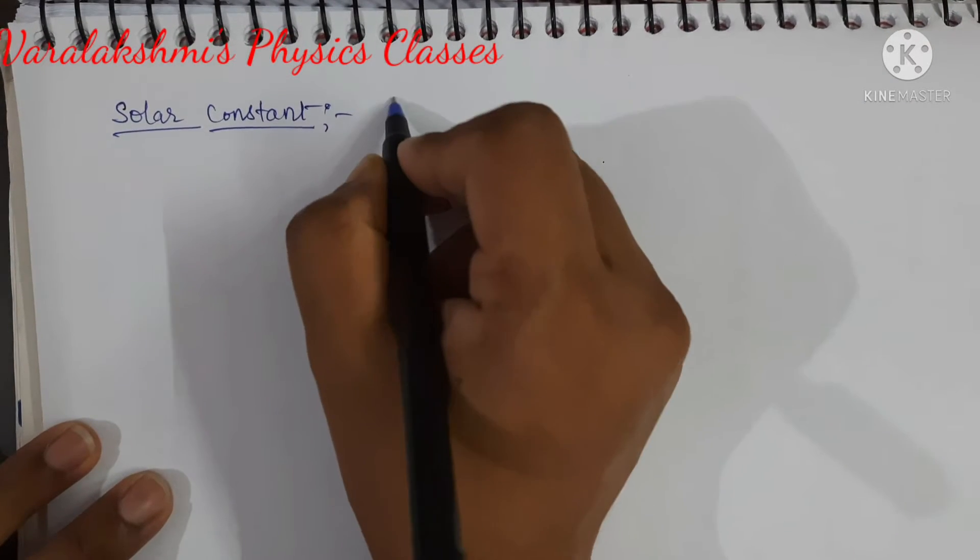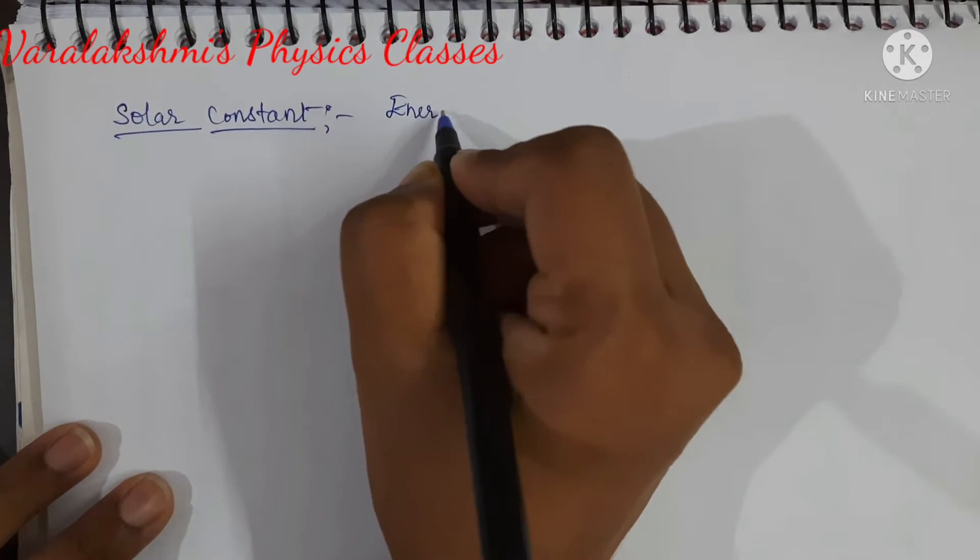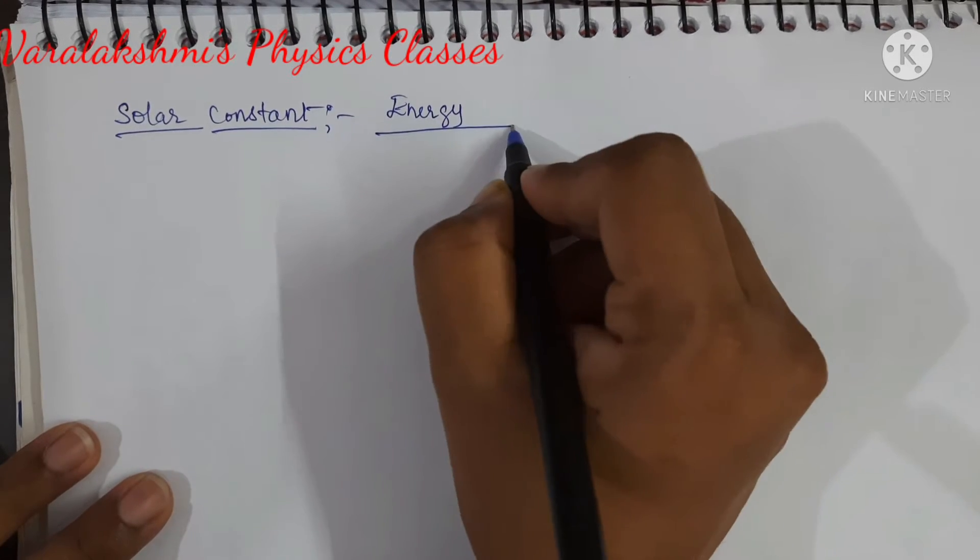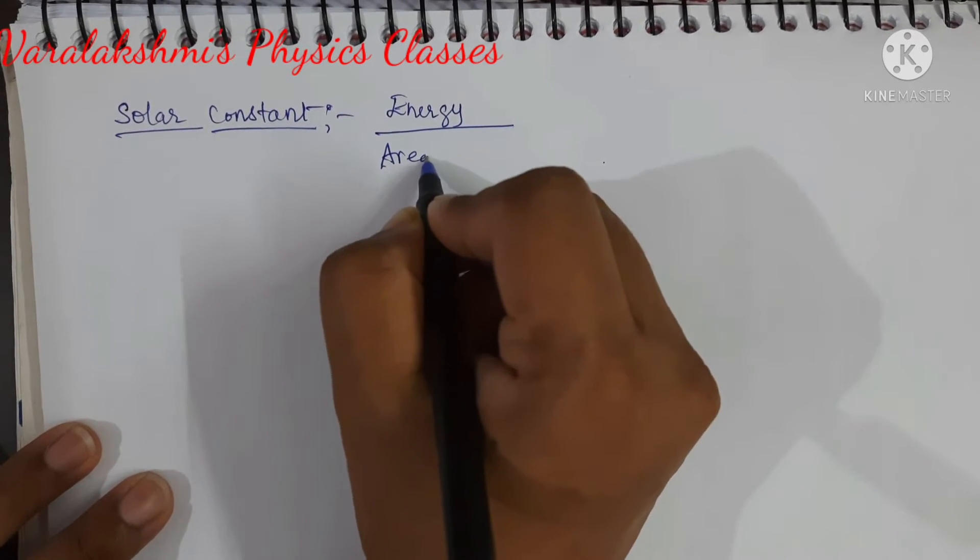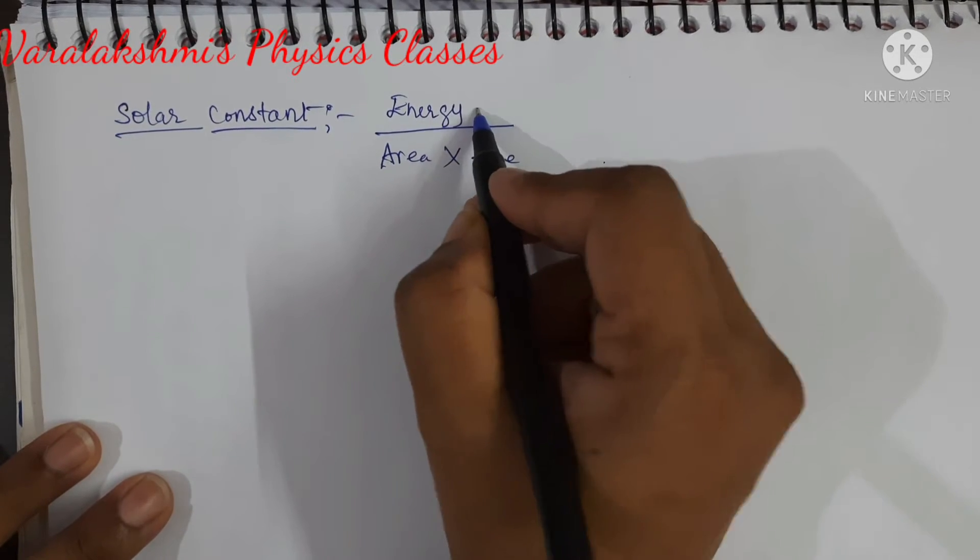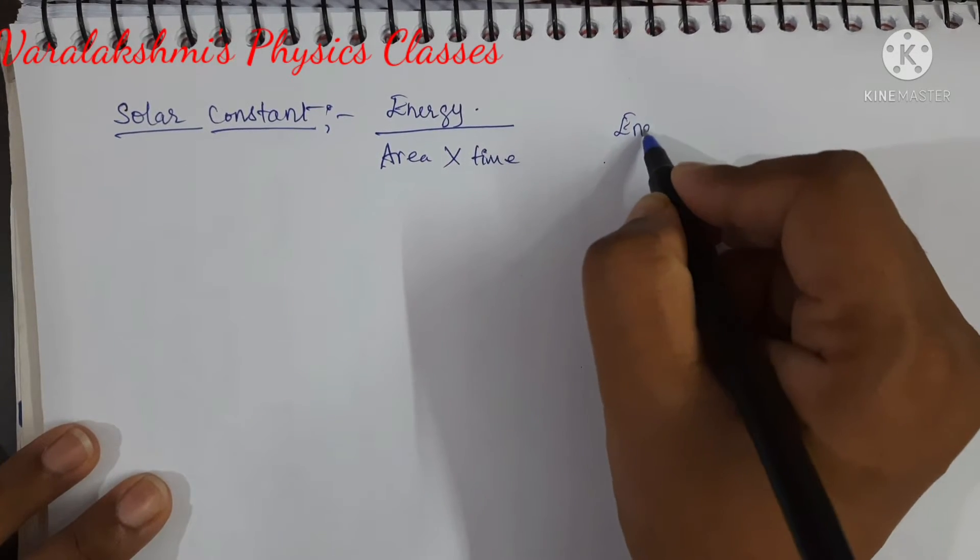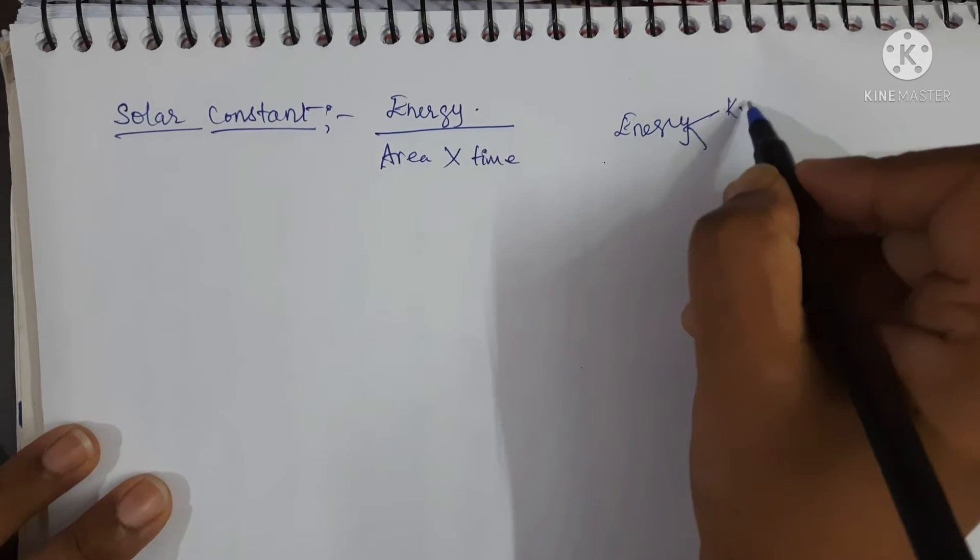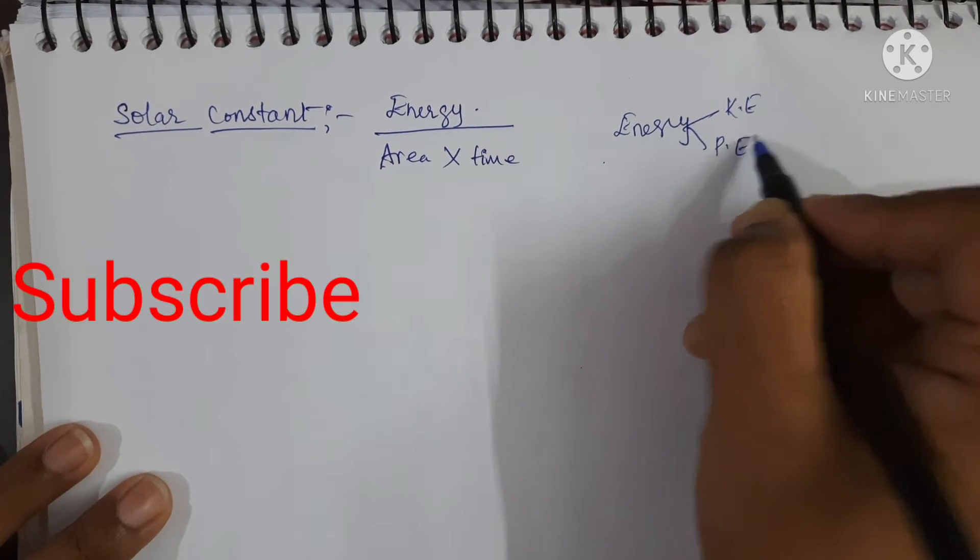Formula for solar constant is energy upon area into time. So for energy, here I am considering kinetic energy and potential energy.